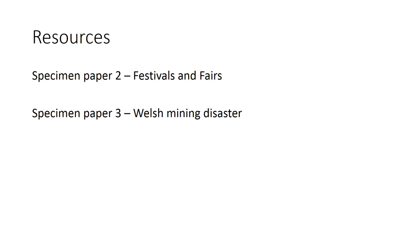We're going to be looking at two papers today: the festivals and fairs one, set at Glastonbury and when Dickens went to the Greenwich Fair, and one that some of you did for your mock exam — the Welsh mining disaster followed by the London earthquake, which essentially wasn't really a big earthquake at all. If you've got these printed off and in front of you, particularly the passages, you'll be fine to try some of the techniques. Get yourself a pen and paper and have a go at some of these answers, then bring them in for your teachers.